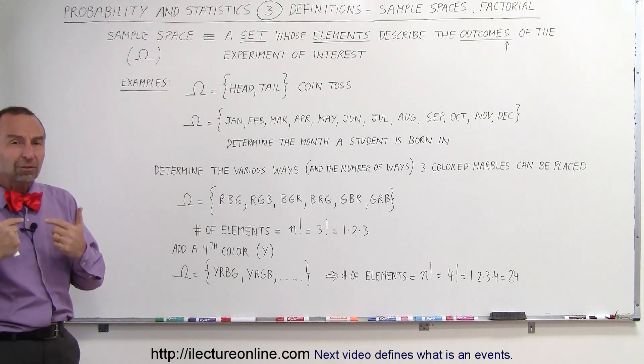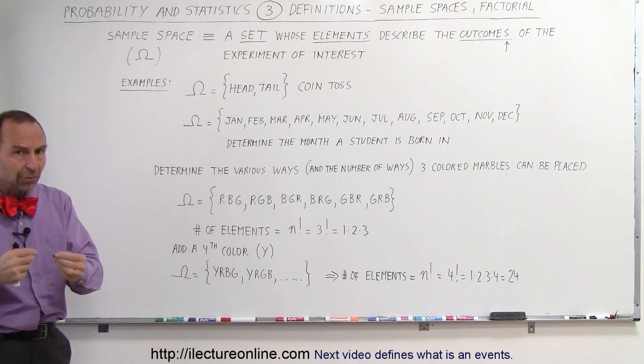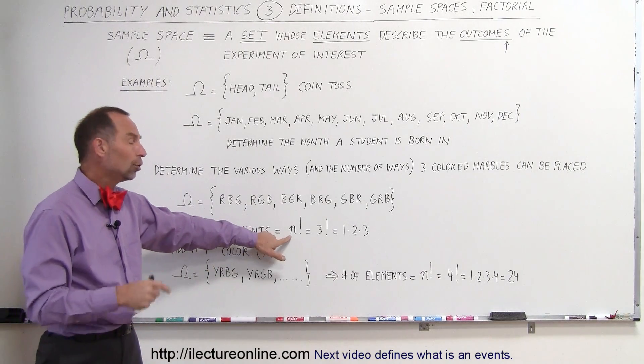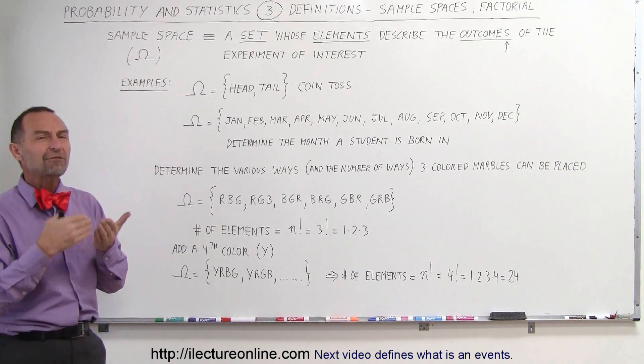The way we can find out how many possibilities there are, we can simply say the number of elements, the number of outcomes or possibilities, is equal to the number of marbles that we have—in this case, three—factorial. Now what does that mean, factorial?